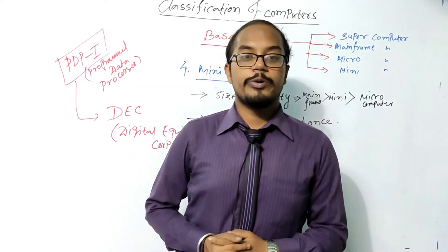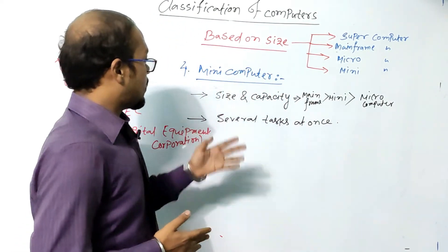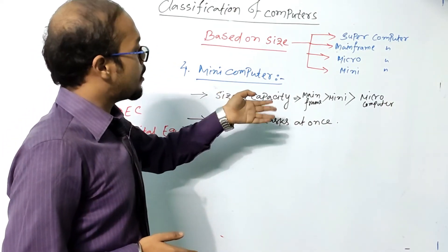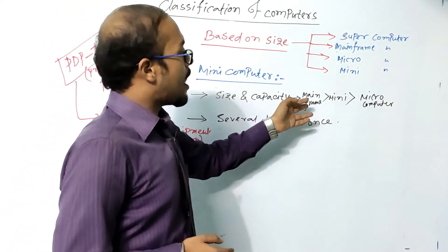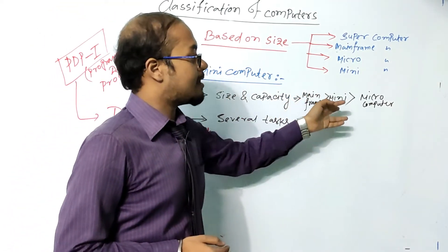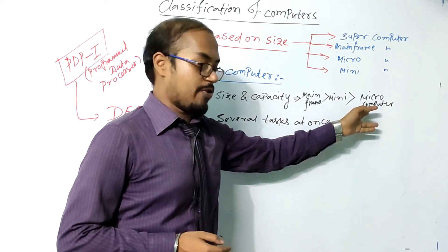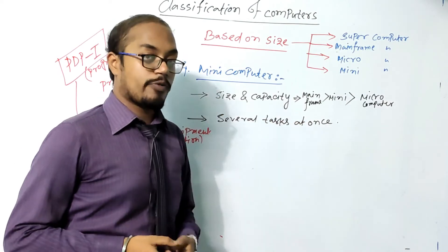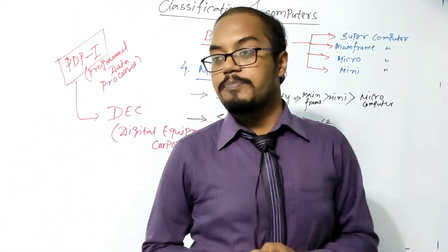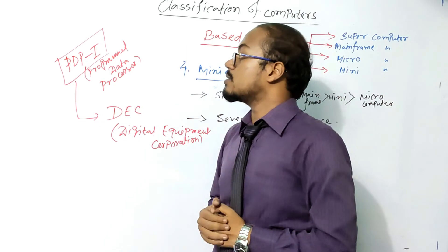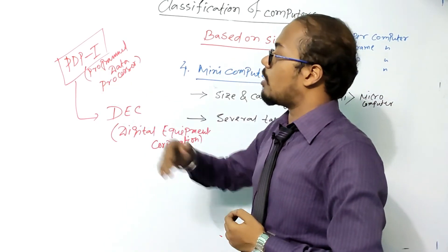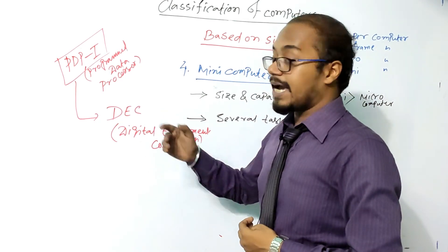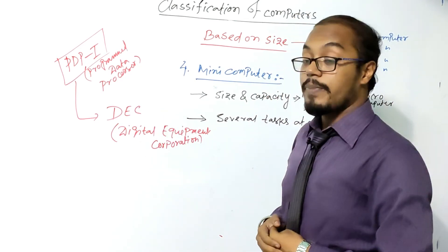Lastly, we have minicomputers. Their size and capacity are less than mainframe computers but greater than microcomputers. Minicomputers can perform several tasks at once. The first minicomputer in the world was the PDP, which stands for Programmed Data Processor, developed by DEC — Digital Equipment Corporation.